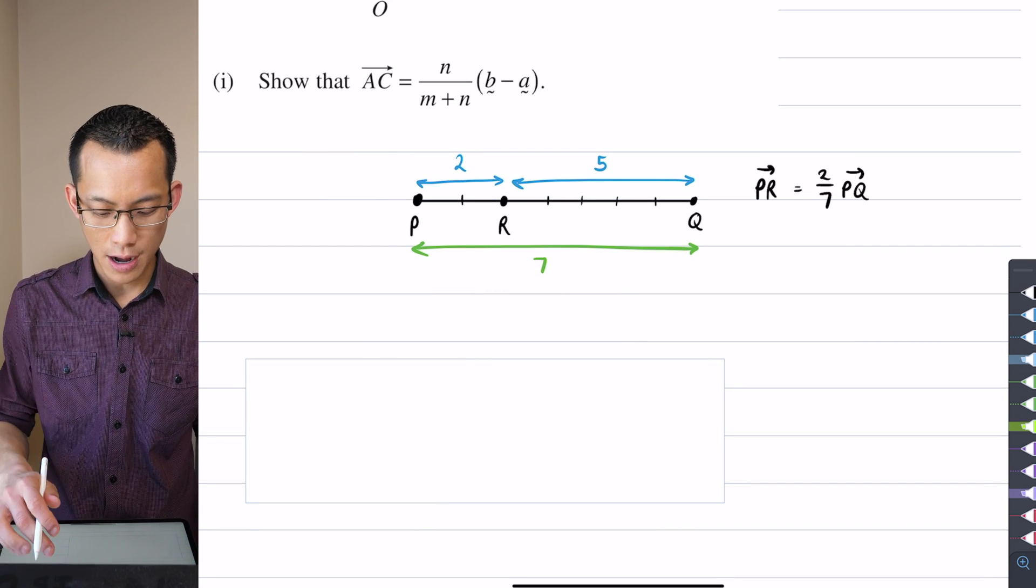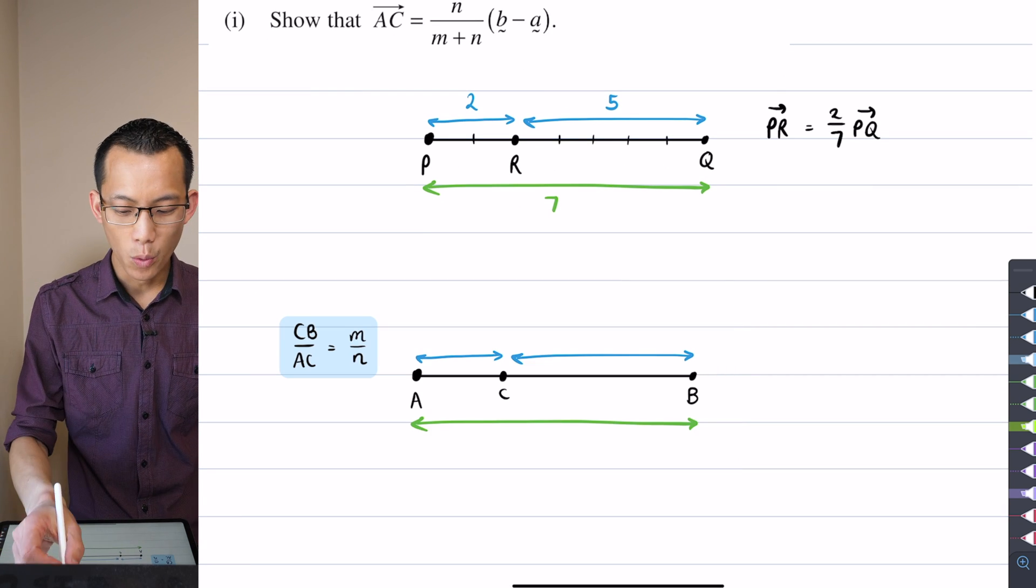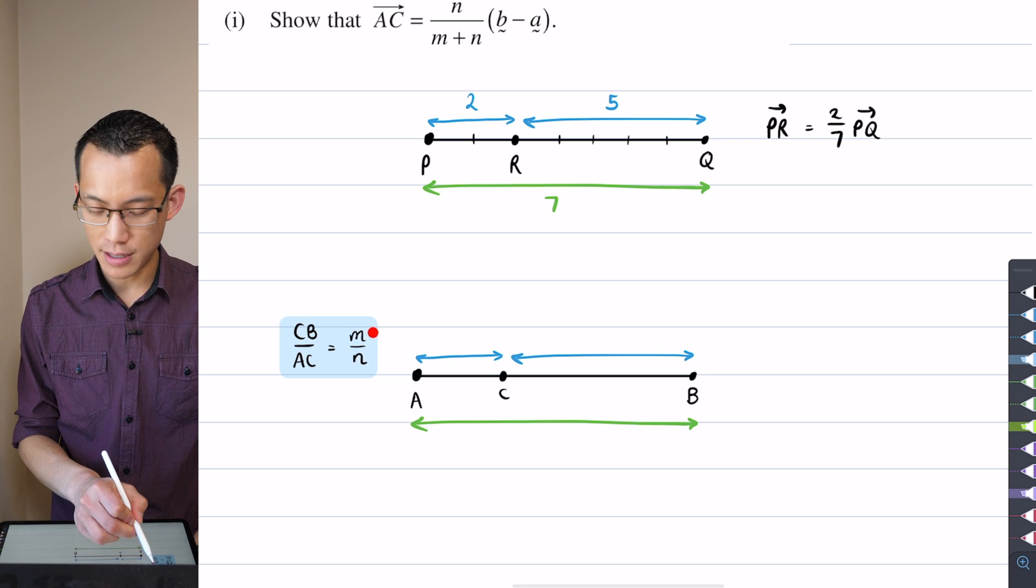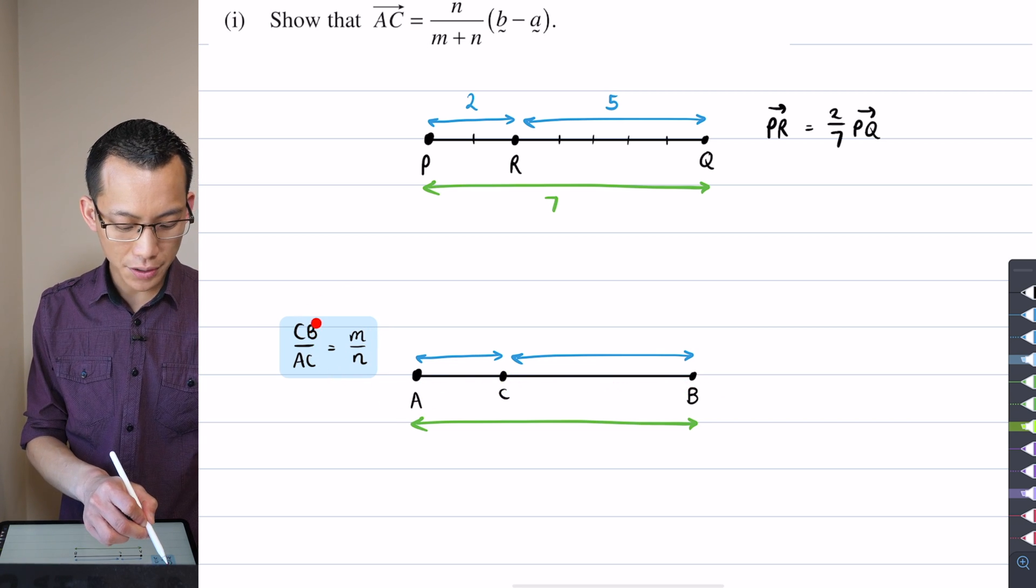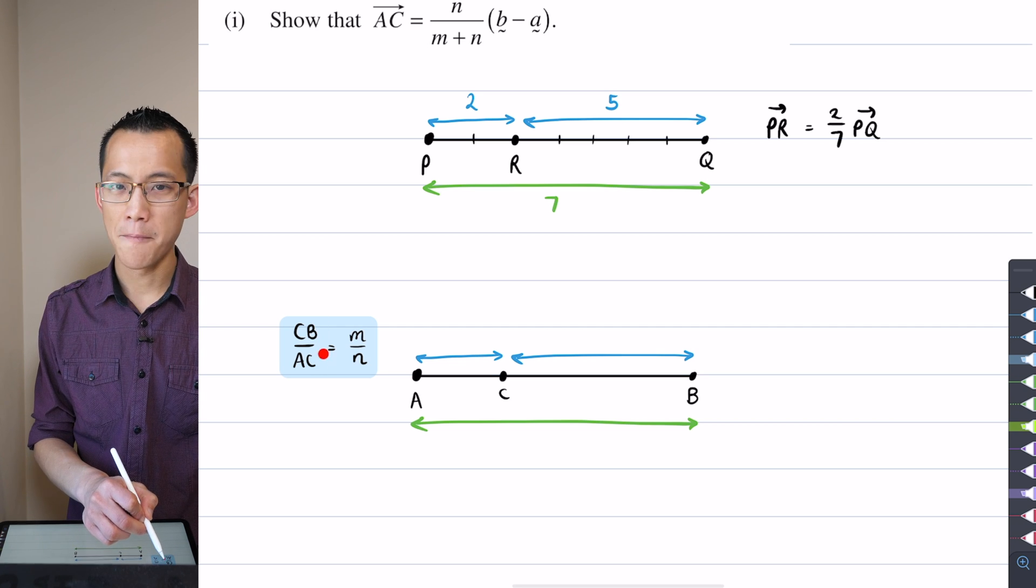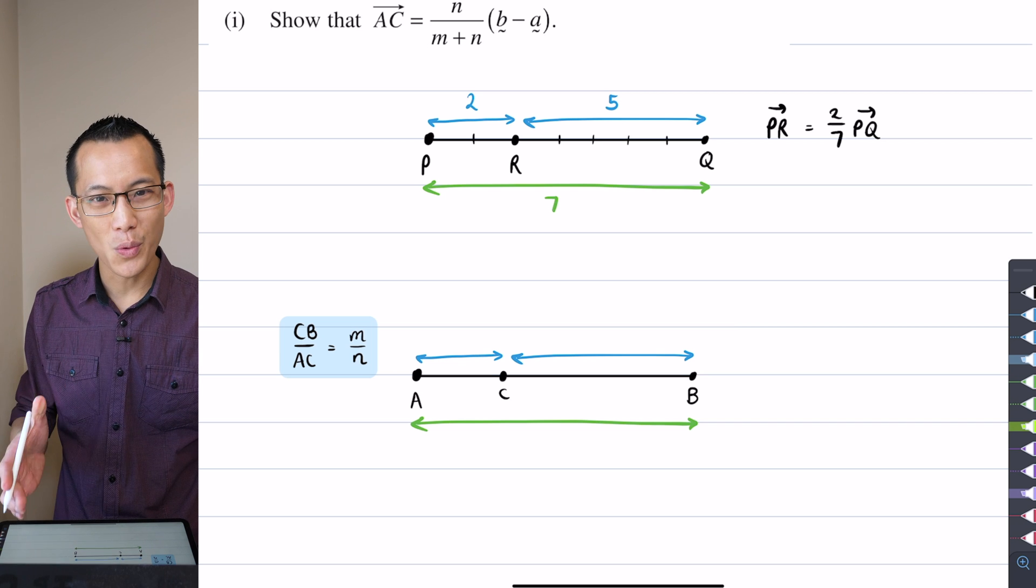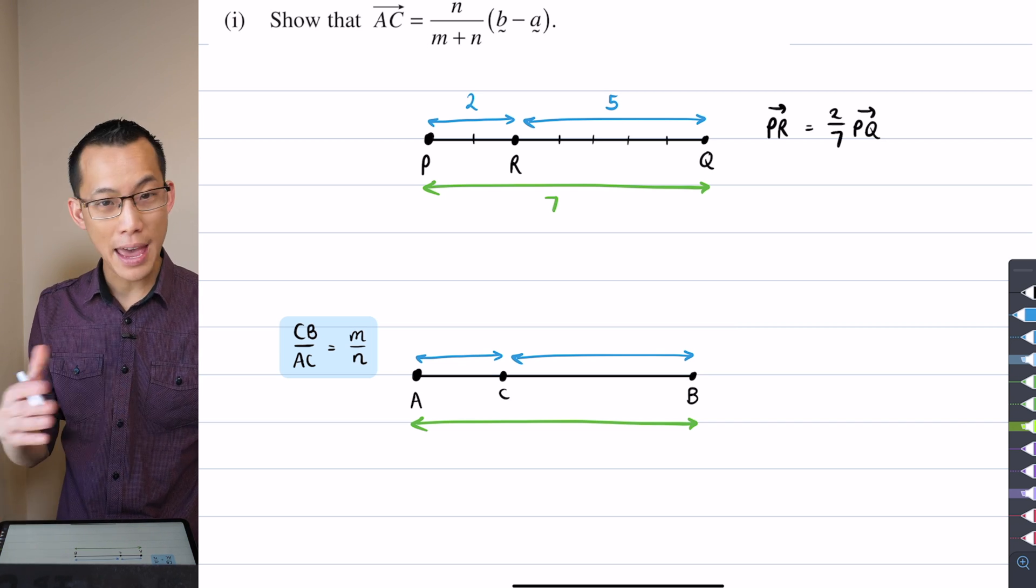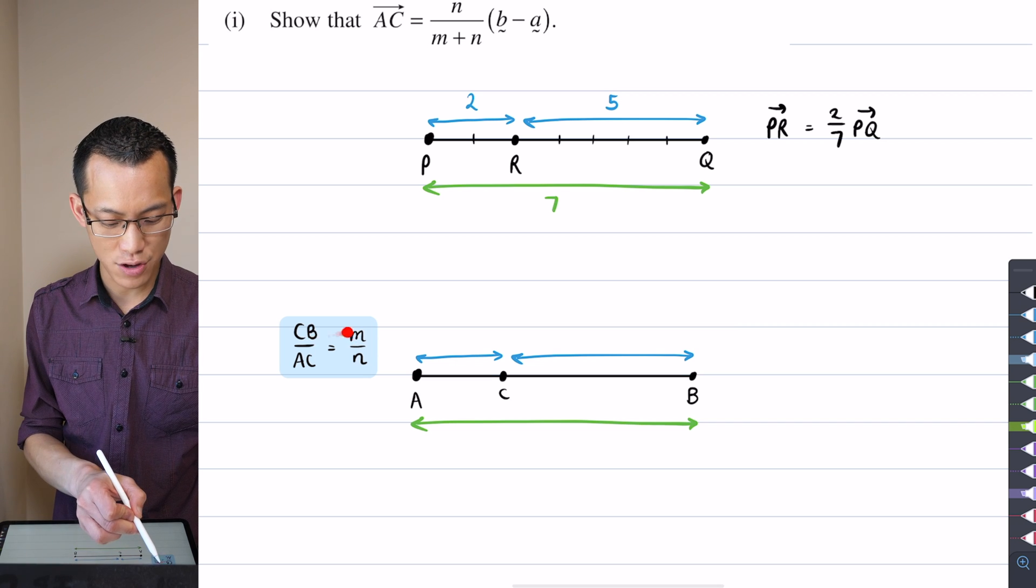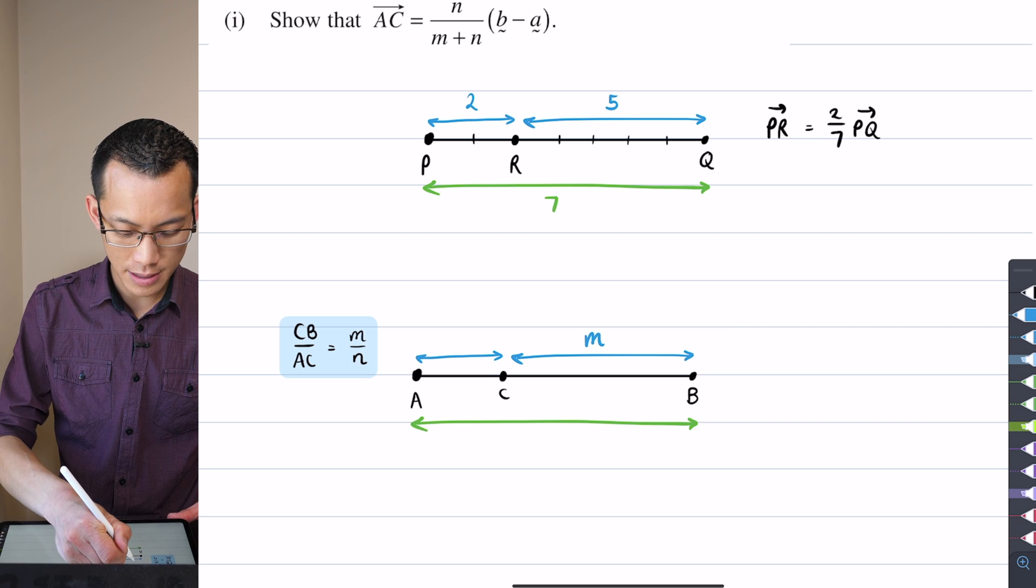So how do I bring this into our pronumeral, our unknown kind of situation here? Well, this is the relationship we've been told. In this situation I don't have a PQ and an R, I've got an AB and a C. If you're told that CB on AC is m over n, which one is m and which one is n? You just have to be a teeny bit careful here. You just compare across the numerators and you compare across the denominators.